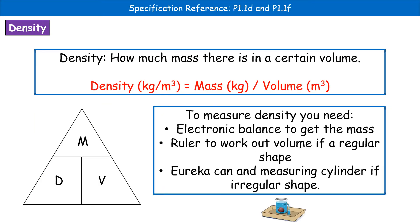Our next bit is our first calculation. Do remember, this year you are being given all the physics formulas on the data sheet, ordered by unit, so this will be near the very beginning. We're looking at density, which is simply how much mass there is in a certain volume. We work it out as mass in kilograms divided by volume in metres cubed. Double-check that they've given you the mass in kilograms and not grams — if it's in grams, divide by 1,000 to get kilograms first.